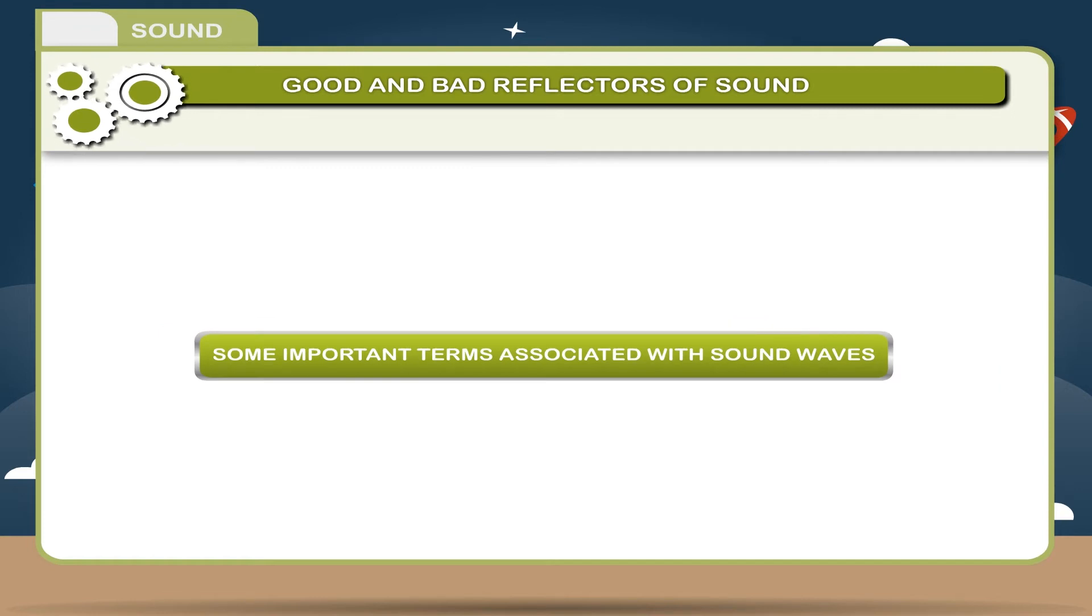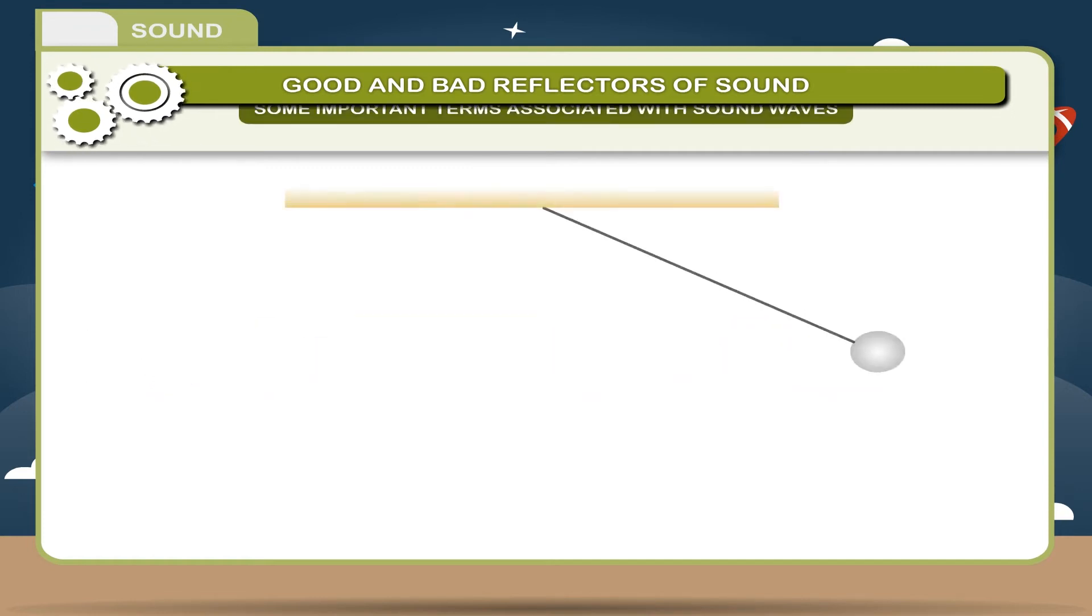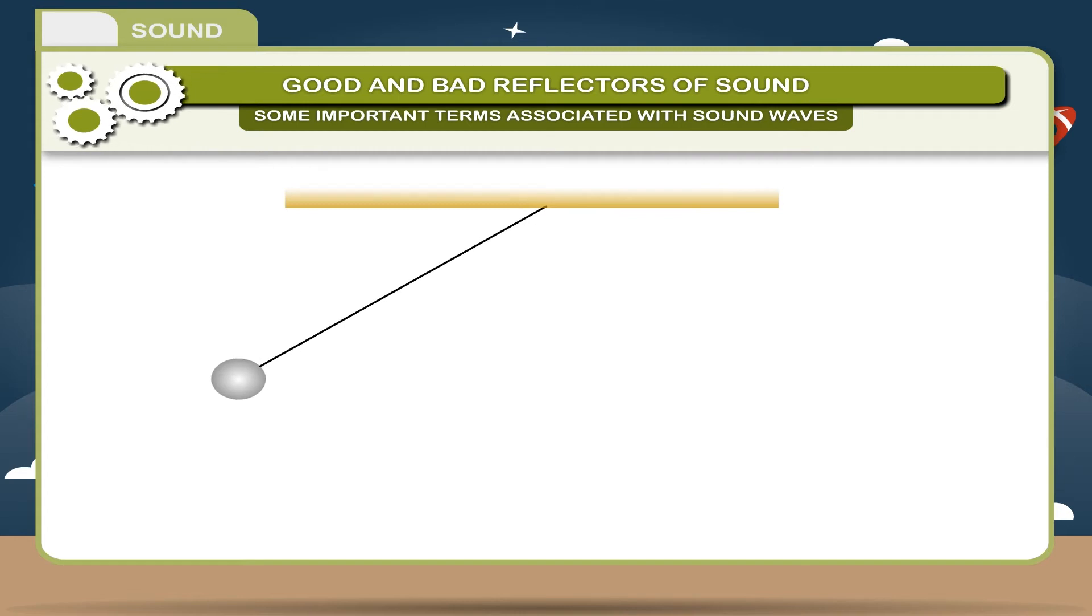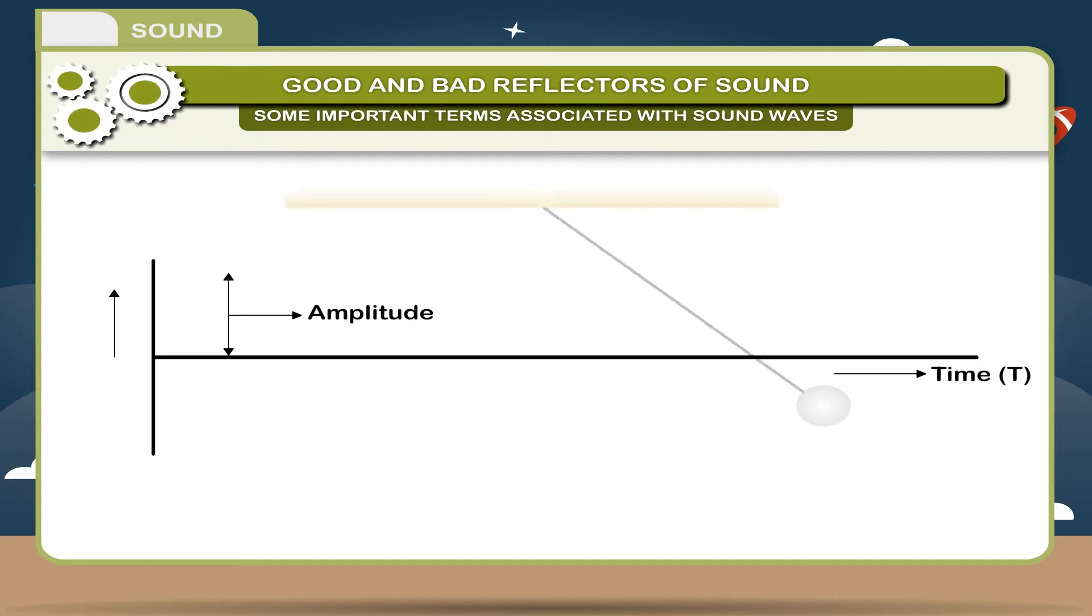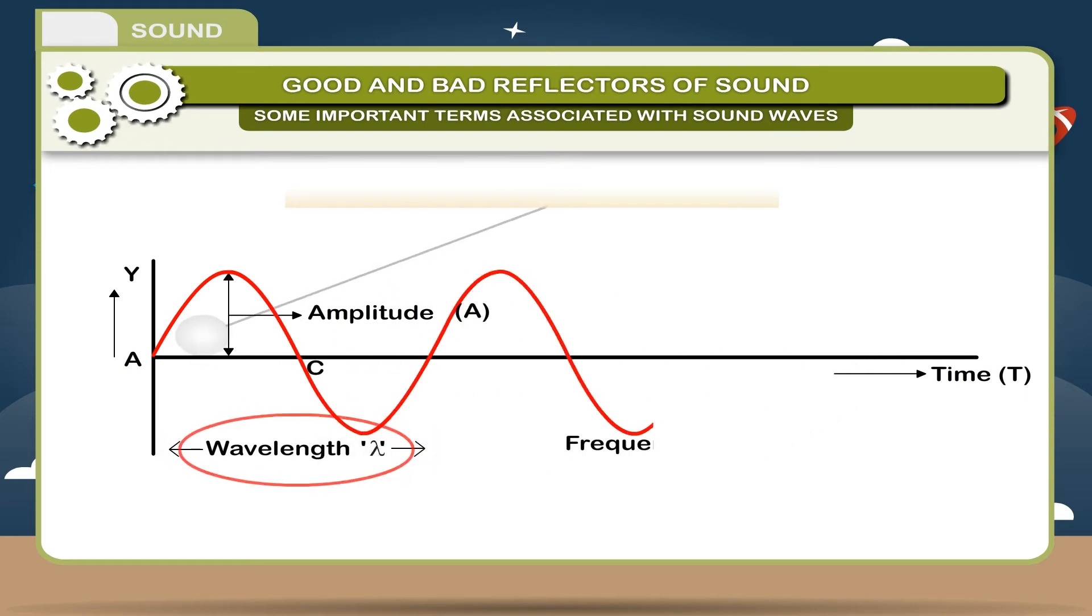Some important terms associated with sound waves. A wave can be shown graphically in this figure. 1. Wavelength: Wavelength is the distance travelled by a wave in unit time period. Distance between A and C is called wavelength. It is measured in meter, m.